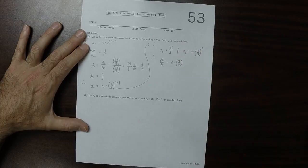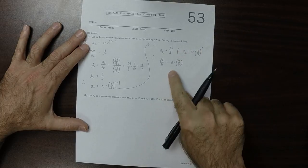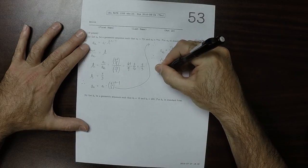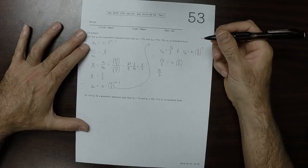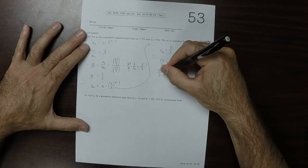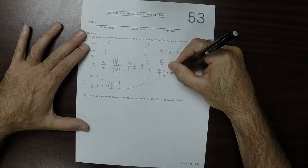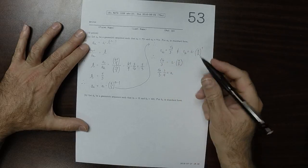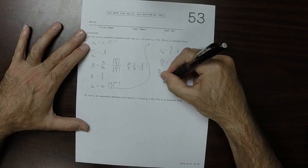So we know that 16 thirds is a multiplied by 4 thirds. And so if we multiply both sides of the equation by the reciprocal of 4 thirds, we have 16 over 3 multiplied by 3 over 4 is a. The 3's cancel. 16 over 4 is 4. So that tells us that a is 4.